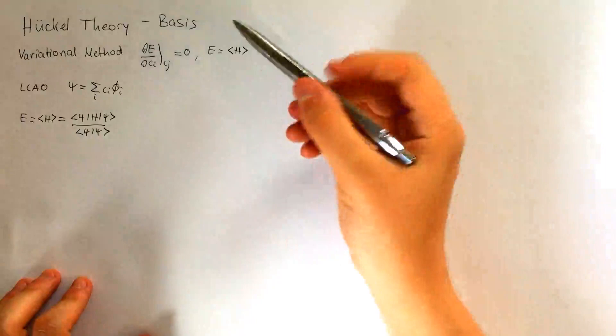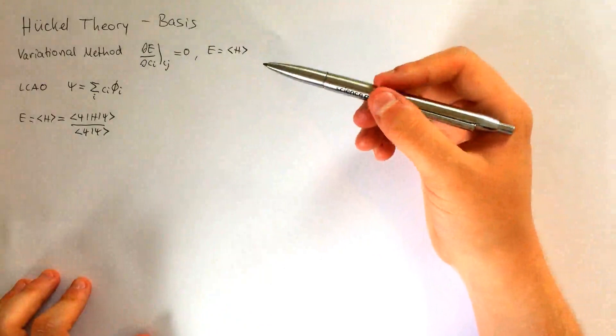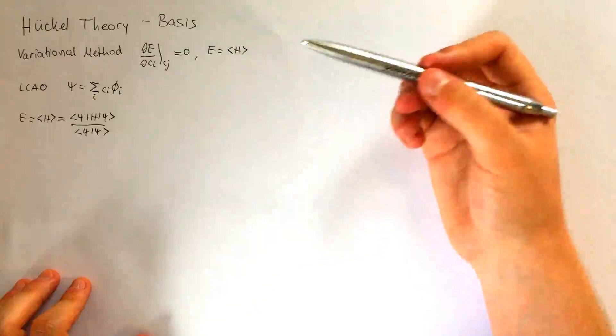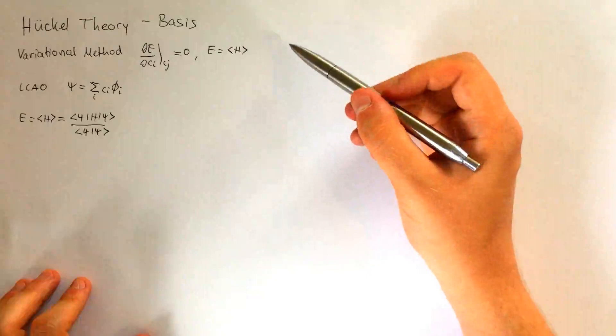In this video, we're going to talk about the Hückel theory, more specifically the basis of the Hückel theory. Hückel theory is usually used for unsaturated hydrocarbons to find out about their ordering of the energy levels and the degeneracies of the energy levels.